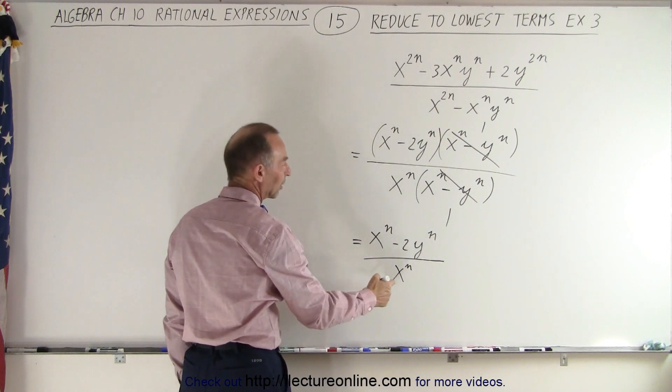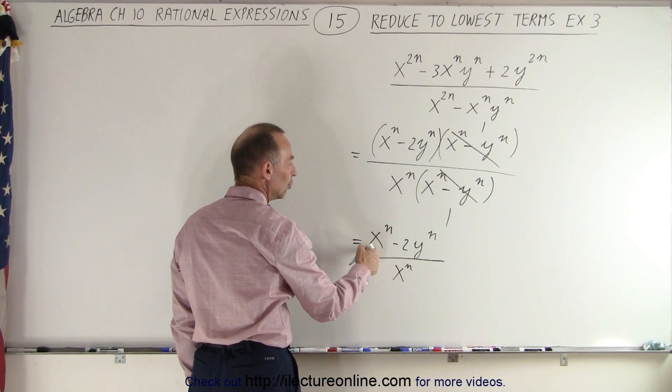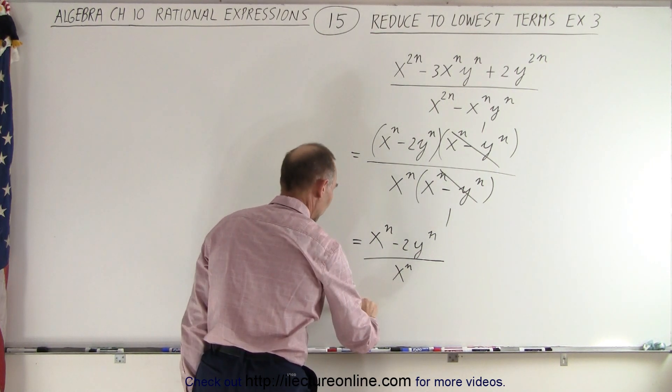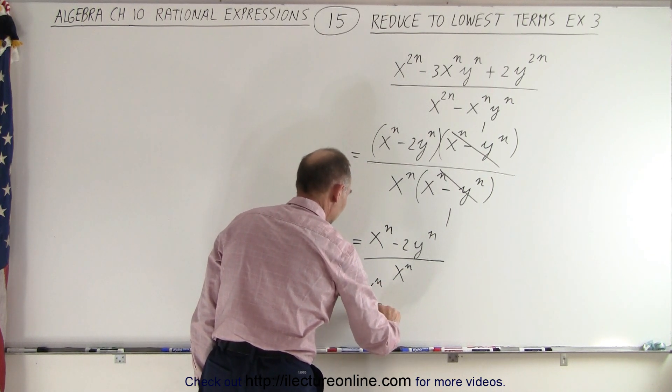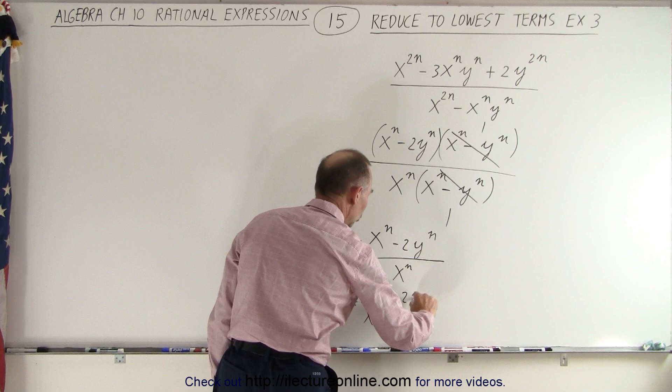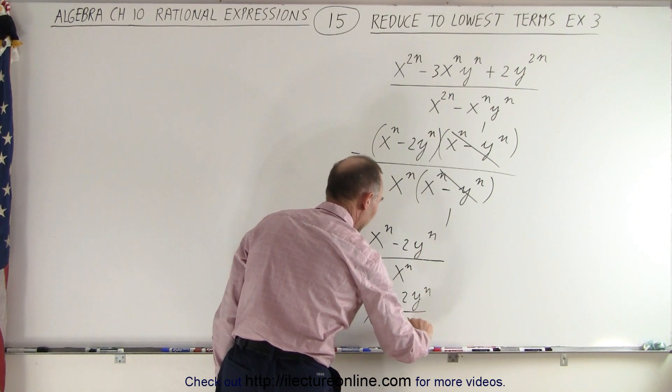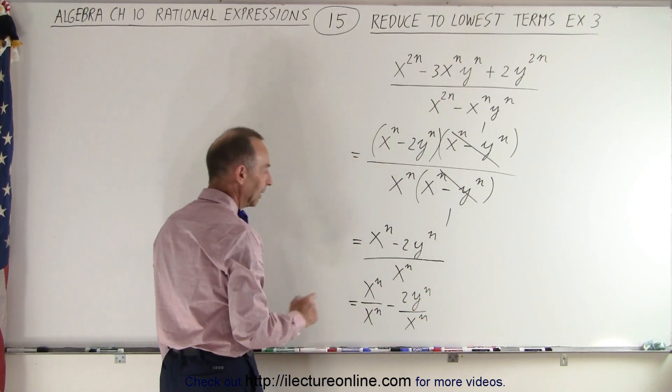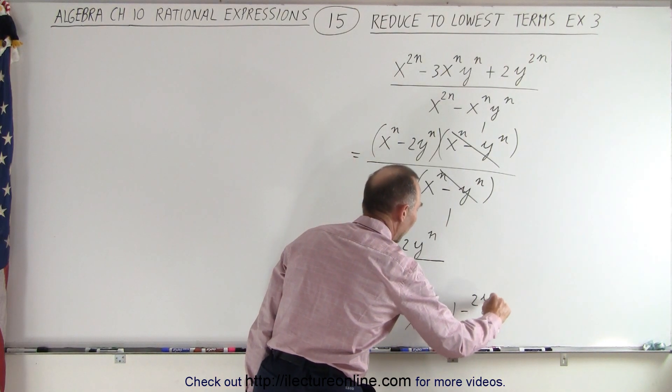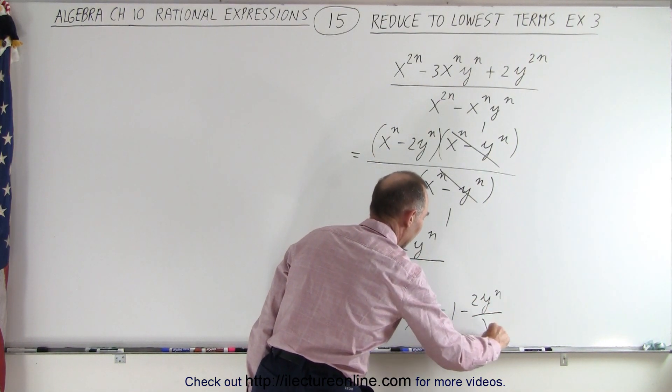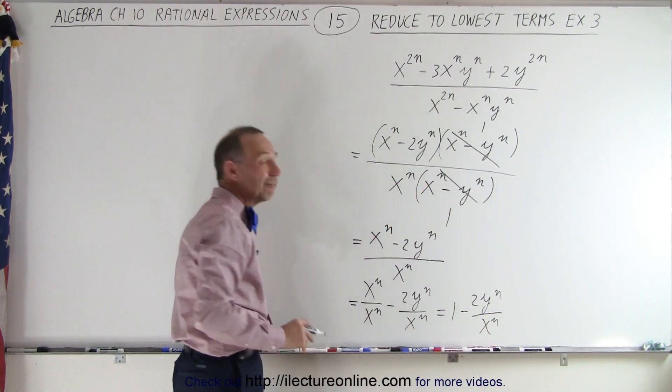Now what I could do is I could divide this into the numerator, and so this could also be written as x to the n divided by x to the n minus 2y to the n divided by x to the n. And then I could write this as 1 minus 2y to the n divided by x to the n if I want to.